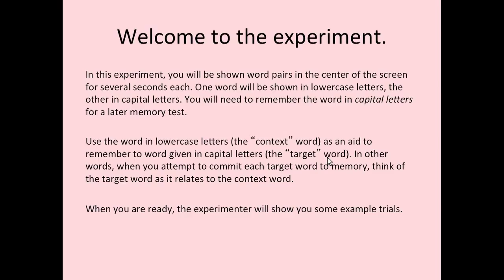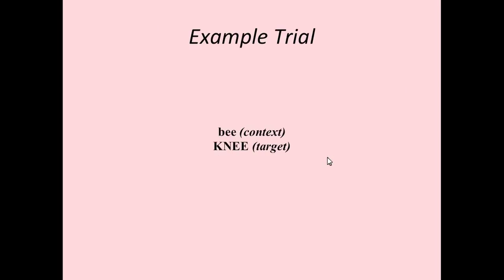When you are trying to remember them, think of the target word as it relates to the context word. For example, 'b' is the context and 'knee' is the target, because it's the bee's knees — so you can remember the word 'knee' because of the word 'bee.' Another example: 'flag' is the context and 'pole' is the target, because flagpoles are something you're familiar with.